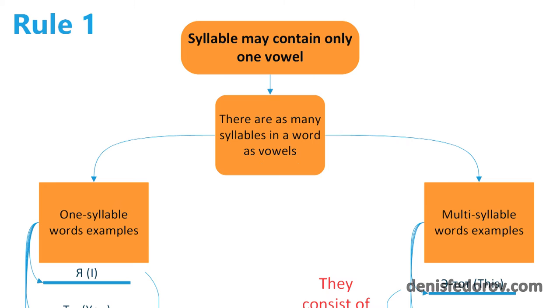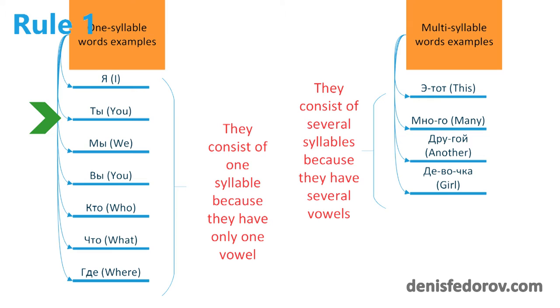The first rule says that syllable may contain only one vowel. It means that there are as many syllables in a word as vowels. Here are examples of words that contain only one syllable. Я, ты, мы, вы, кто, что, где. These words consist of one syllable because they have only one vowel.